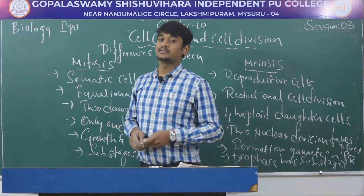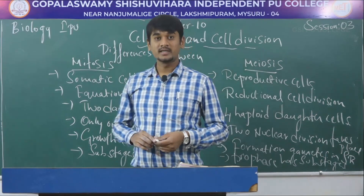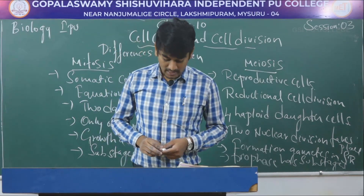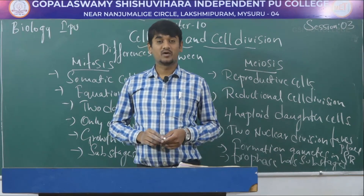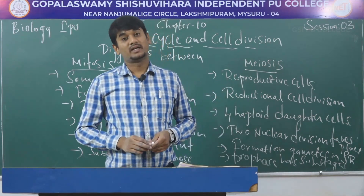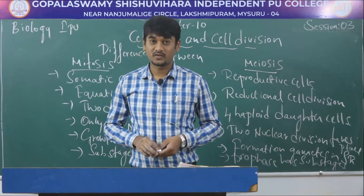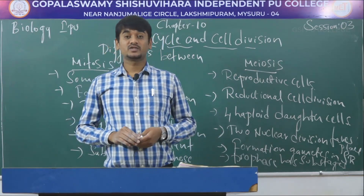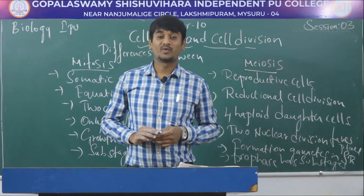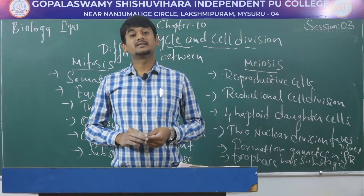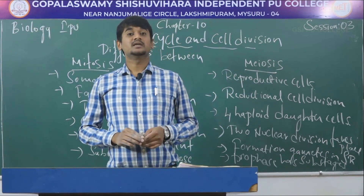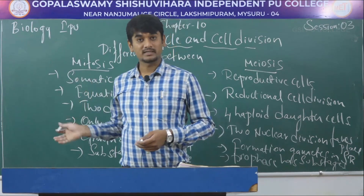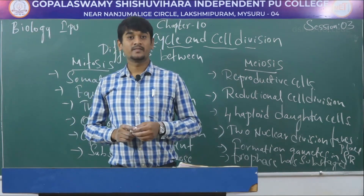In this session, we discussed meiosis 2 and its substages: prophase 2, metaphase 2, anaphase 2, and telophase 2, giving four haploid daughter cells. We also covered the significance of meiosis and the differences between mitosis and meiosis. Thank you.